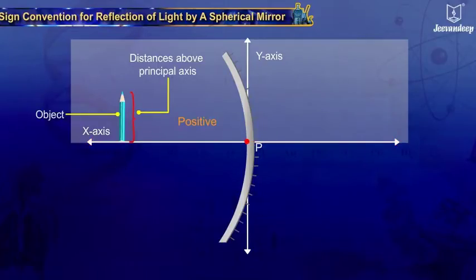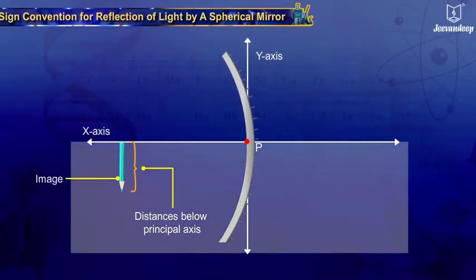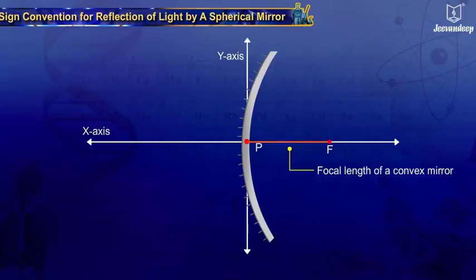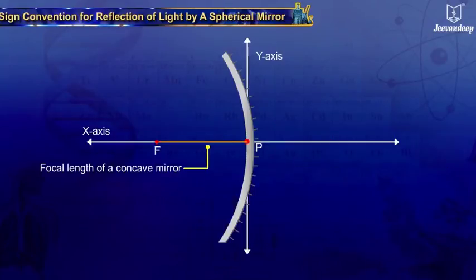Five, distances measured perpendicular to and below the principal axis are taken as negative. Six, the focal length of a convex mirror is positive, while that of a concave mirror is negative.